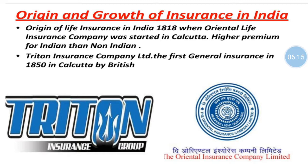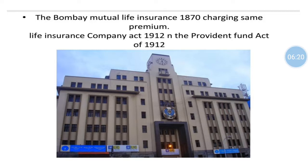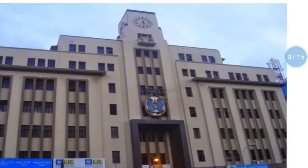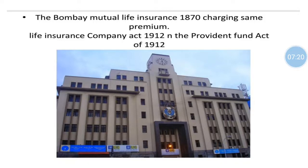Triton Insurance Company started in 1850 by the British government. The third is Bombay Mutual Life Insurance, started in 1870. The main advantage and characteristic of Bombay Mutual Life Insurance was that it charged the same premium from Indians as from non-Indians — meaning the rate of premium was the same for all citizens of the nation, whether Indian or British. Next, the Life Insurance Company started in 1912 after the Provident Fund Act of 1912. The concept of Provident Fund — where some part of salary goes to the government — started in 1912. You can see the logo of this life insurance company.